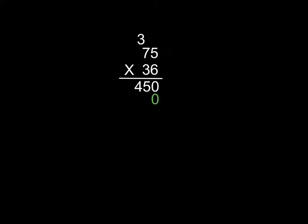So the second step, put a zero down, and then you'll begin to multiply.